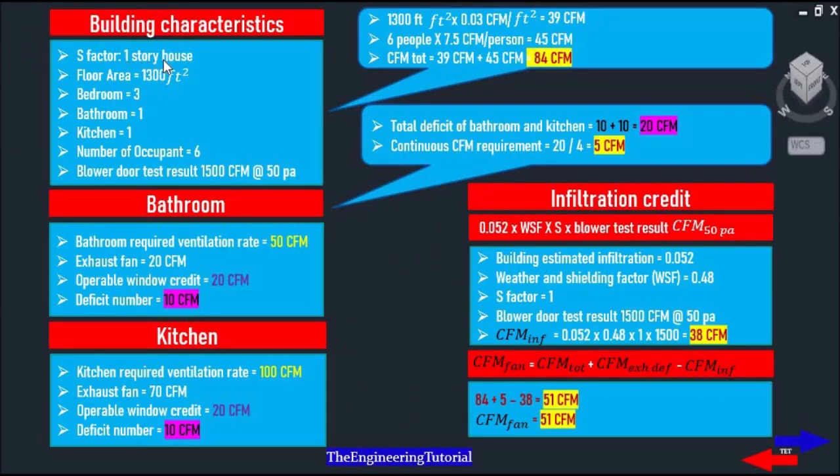Once again, a one story house, a floor area of 1300 square feet, 3 bedrooms, a bathroom, a kitchen. There are 6 occupants and the blower door test result is 1500 CFM at 50 Pascals.